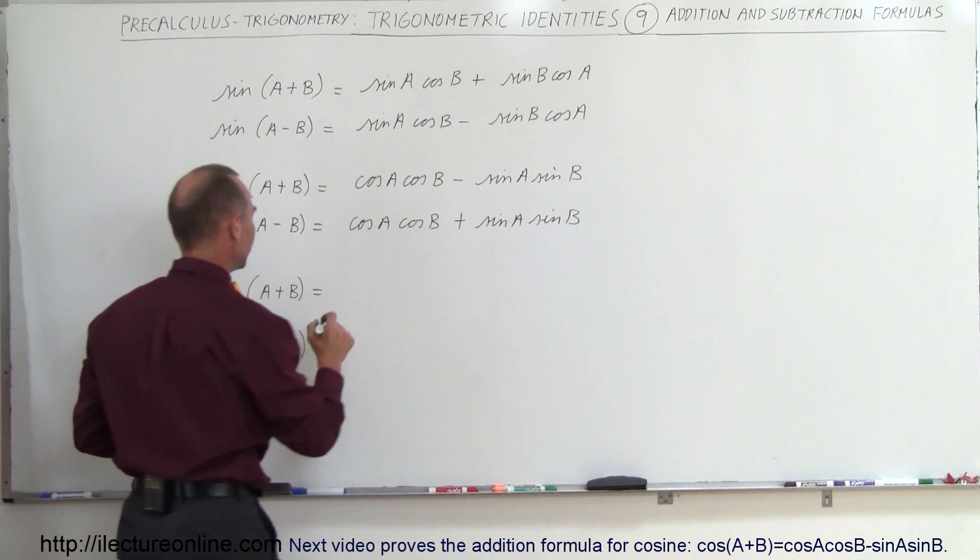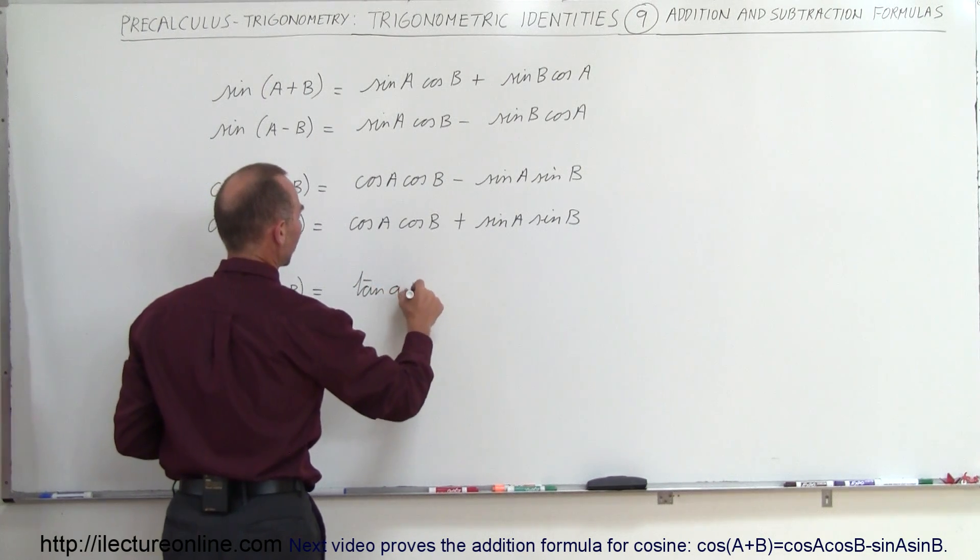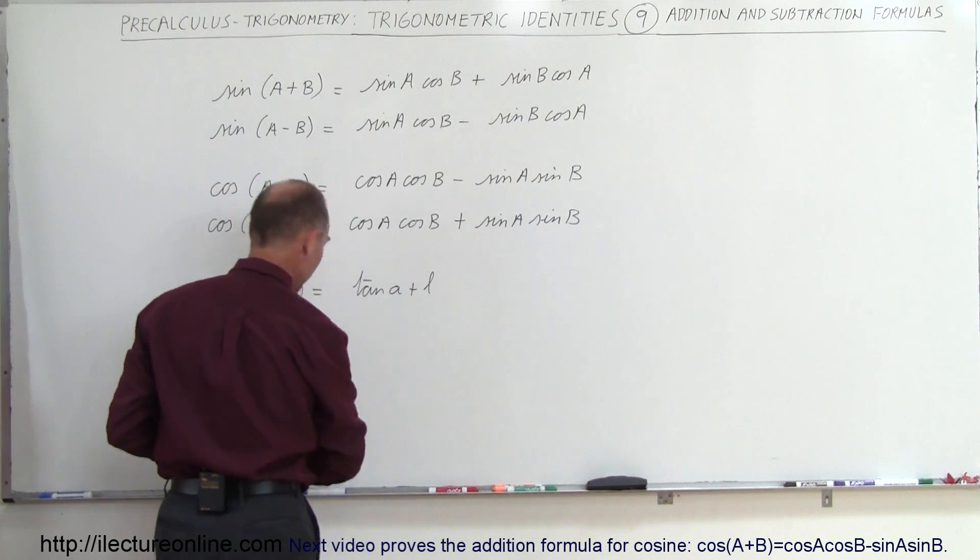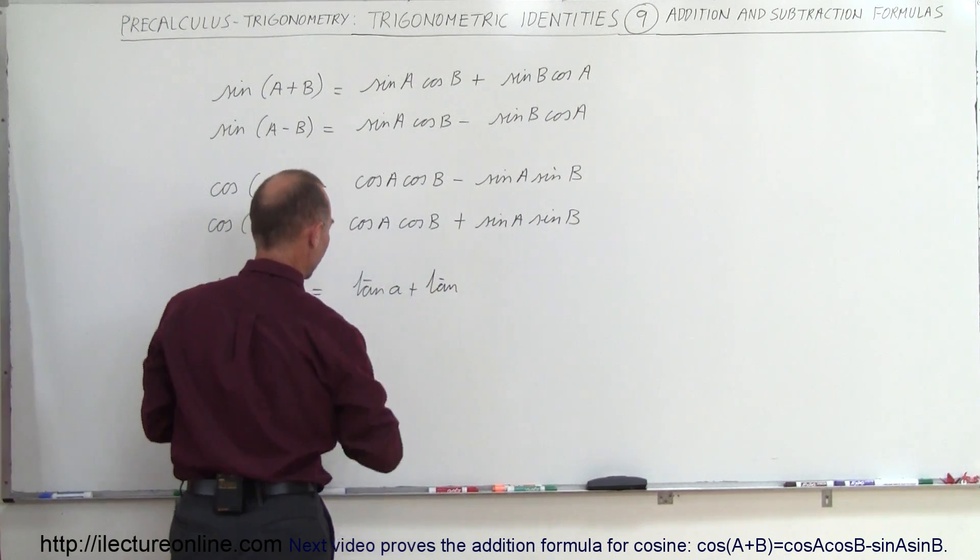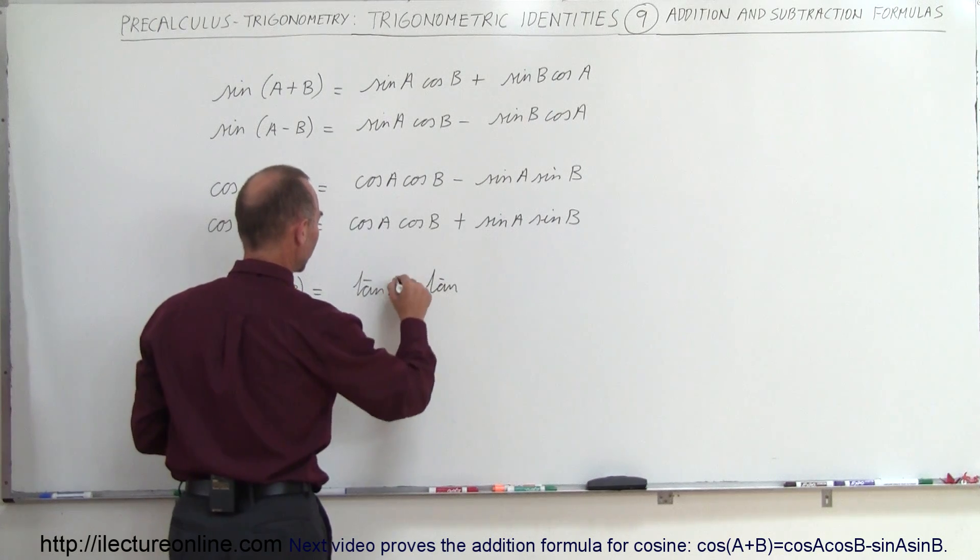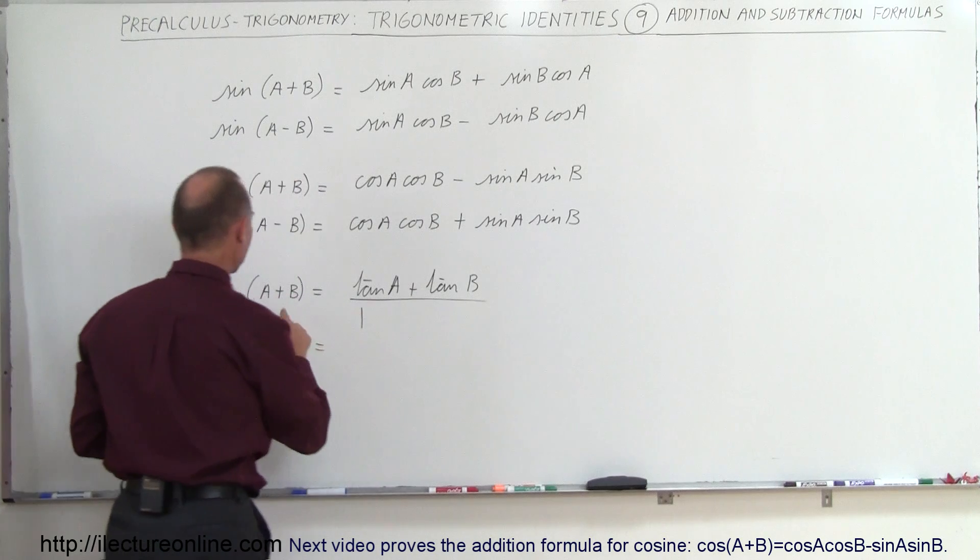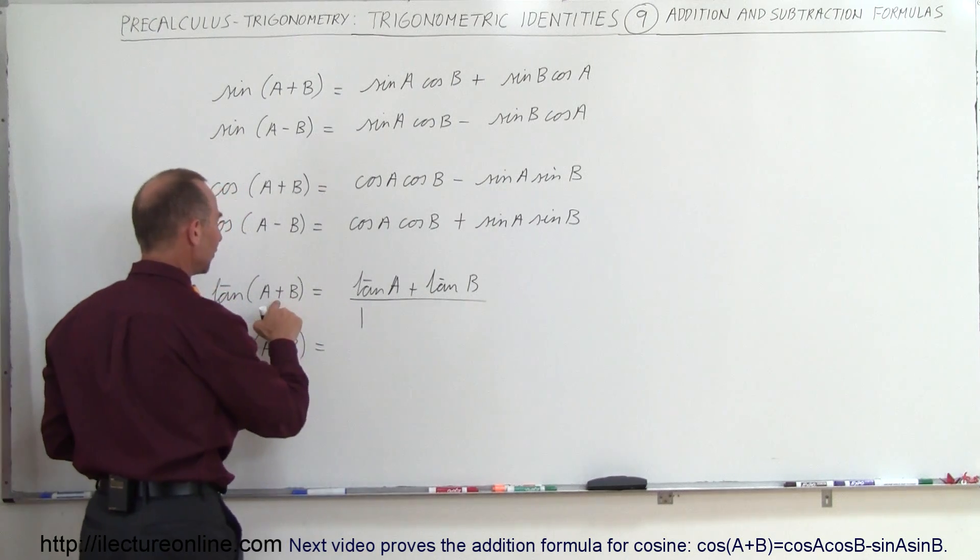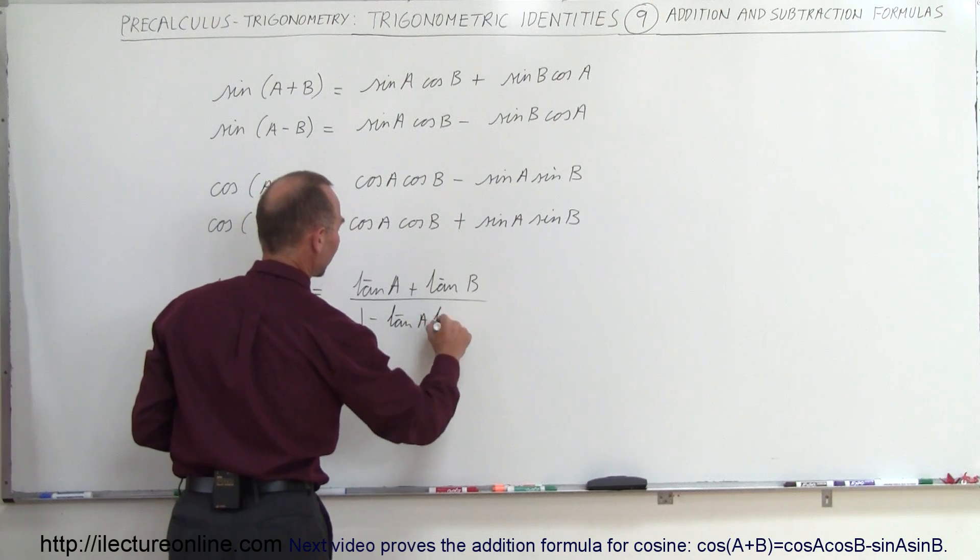As far as the tangent is concerned, this is equal to tangent of A plus tangent of B divided by 1, and here the sign switches. If this is a plus, this becomes minus tangent A times tangent B.